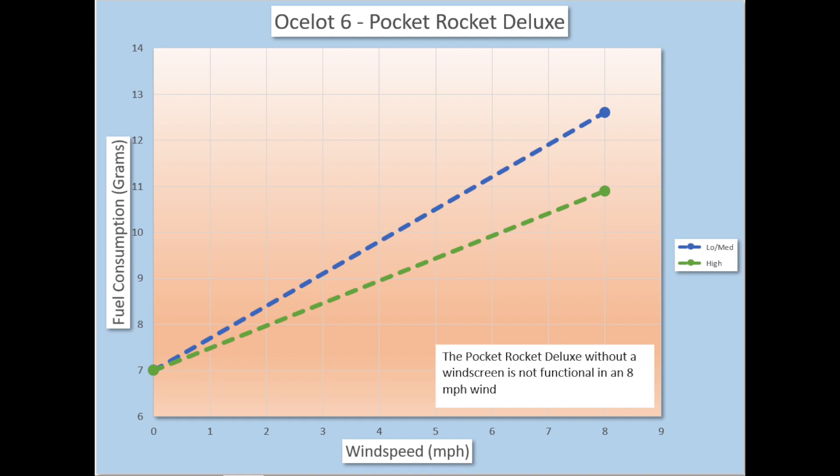In no wind conditions, you can see that the Pocket Rocket Deluxe will bring 500 milliliters to boil using about seven grams of fuel. In an eight mile an hour wind, the fuel consumption goes up by about five grams. So you're in about the 12 gram range. Now keep in mind with no windscreen, you're really not going to get a boil. So this is a pretty good achievement here.